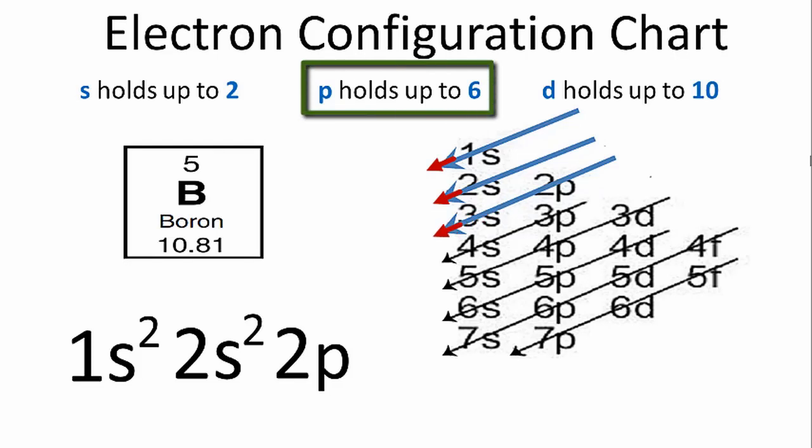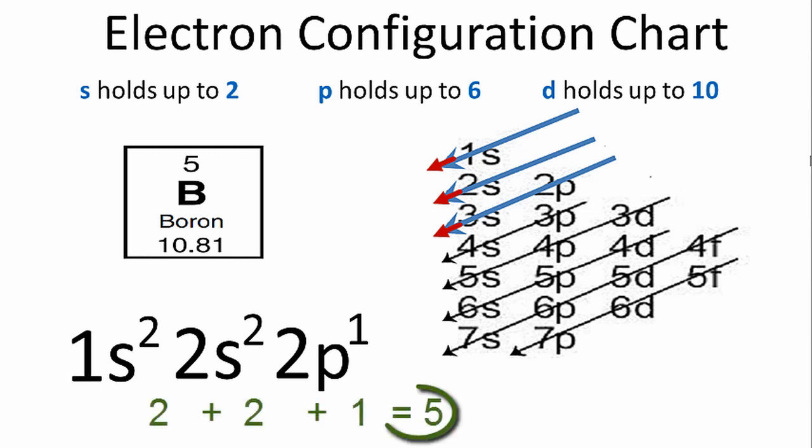We know that the p holds up to six, but we only need one. So that's our electron configuration for boron: 1s² 2s² 2p¹. Notice that the numbers add up to five, just like the number of electrons for the element.